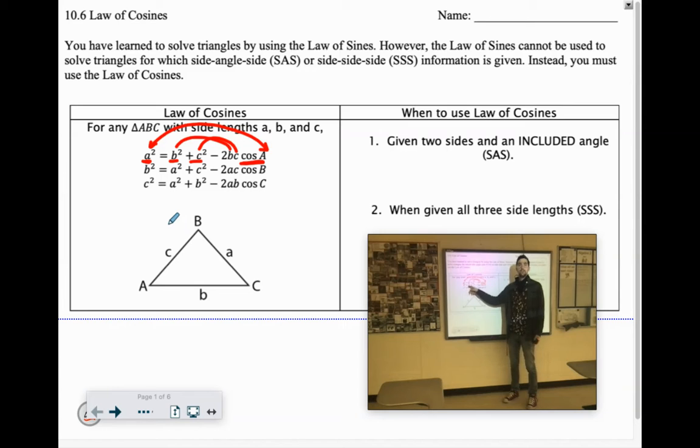So if you're looking for B, you're going to do a² + c² - 2ac cos B. For C, you have c² = a² + b² - 2ab cos C. So it always starts and ends with the same letter. So let's try it out.